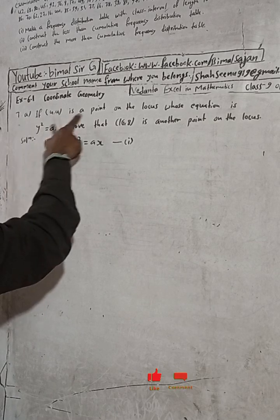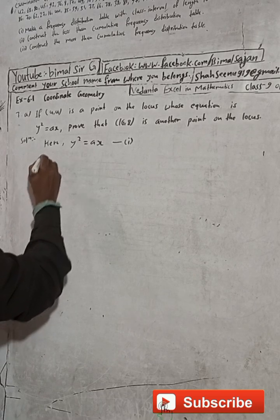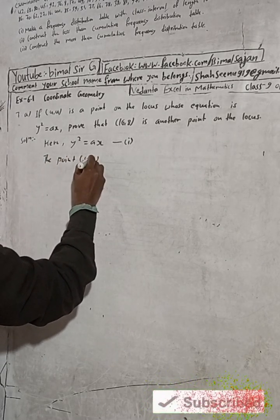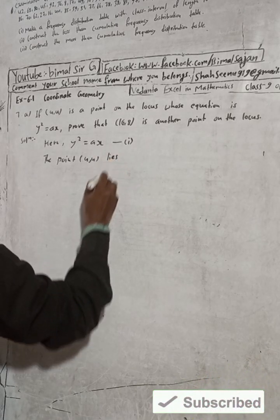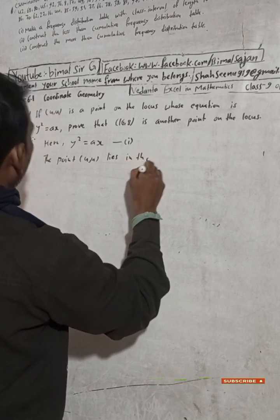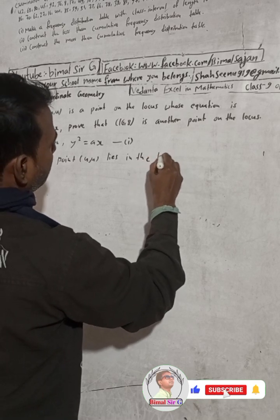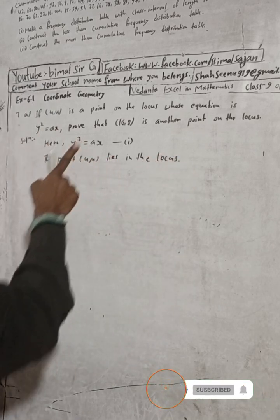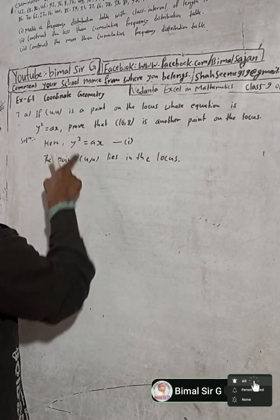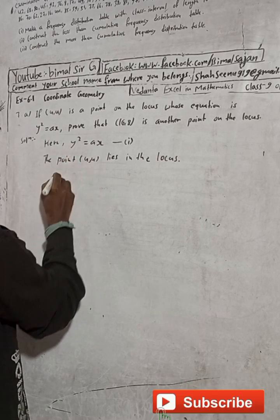Since the point (4, 4) lies on the locus, we substitute into the equation. In the equation y² = ax, in place of x put 4, and in place of y put 4.